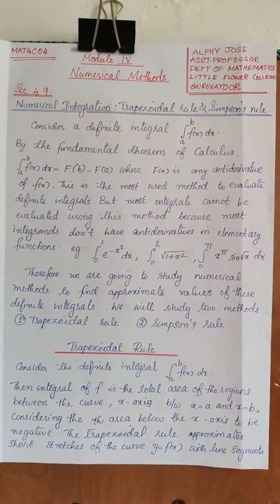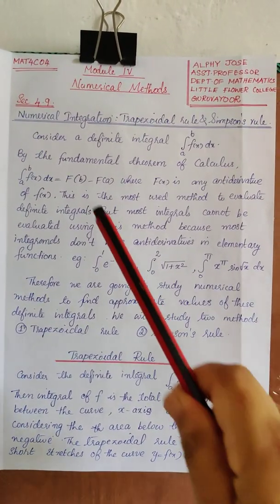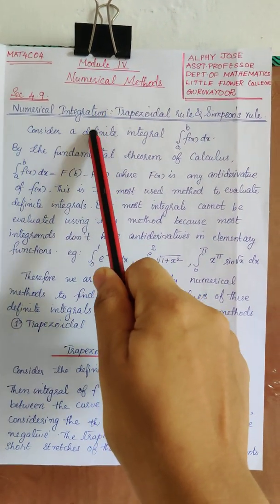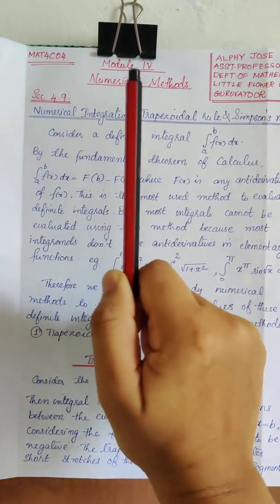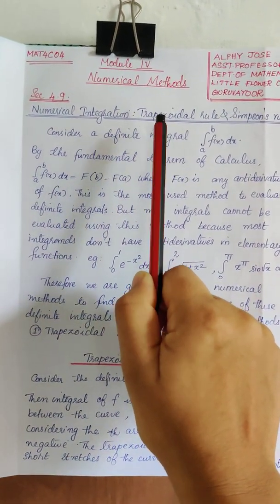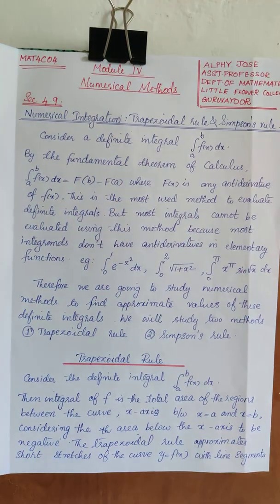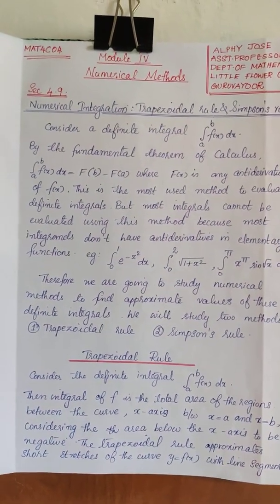Today we are going to discuss about the numerical methods to find definite integral and this belongs to module 4. So here we are going to discuss two rules to find approximate value of definite integrals.